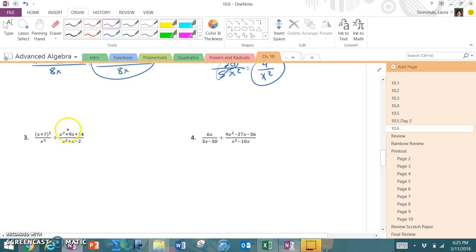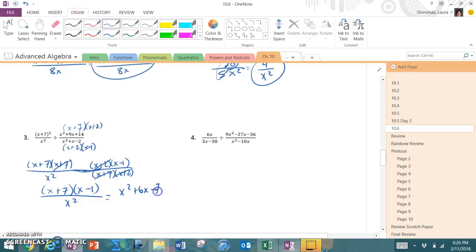Number 3. The top I can factor as x plus 7 times x plus 2. The bottom is x plus 2 times x minus 1. So when I rewrite it, x plus 7 squared is x plus 7 times x plus 7 over x squared times the reciprocal so x plus 2 times x minus 1 over x plus 7 times x plus 2. The x plus 2's cancel, one x plus 7 cancels. I am left with x plus 7 times x minus 1 on top over x squared. I distribute that out and I get x squared plus 6x minus 7 over x squared.